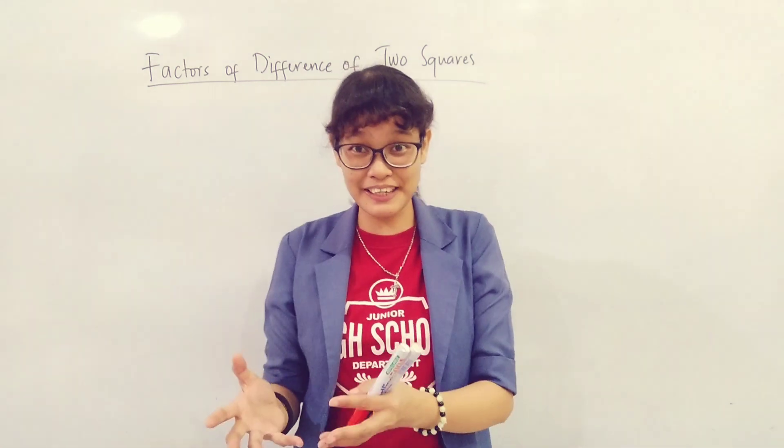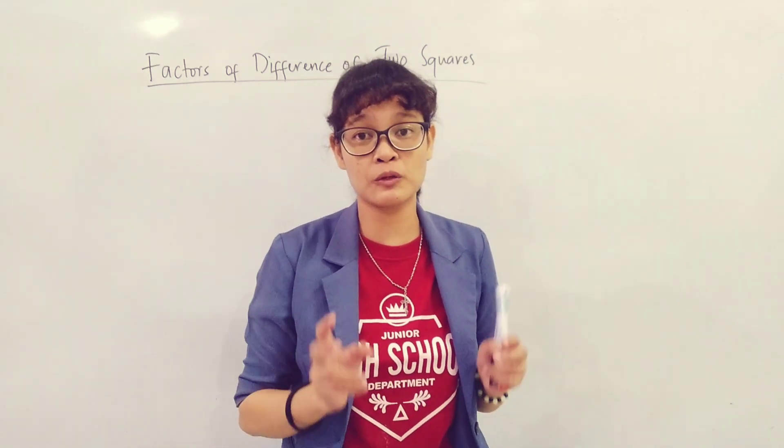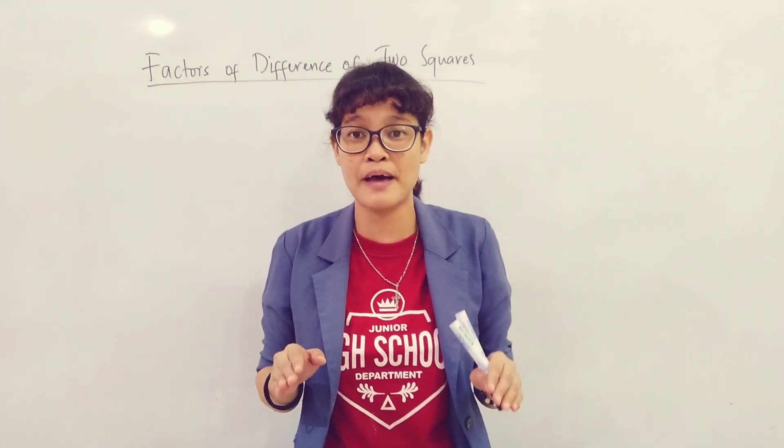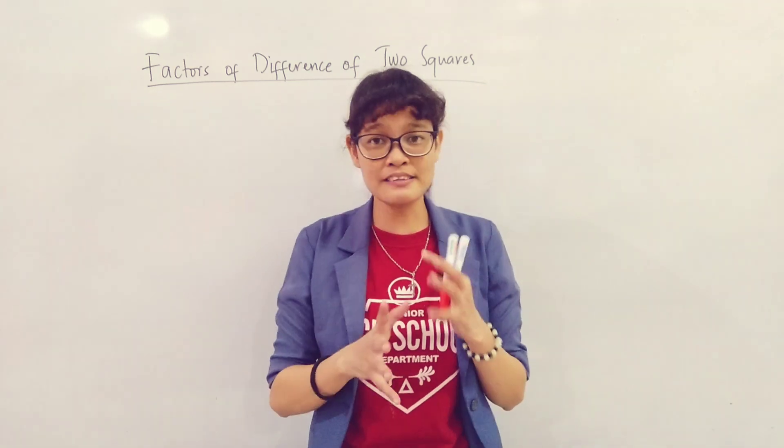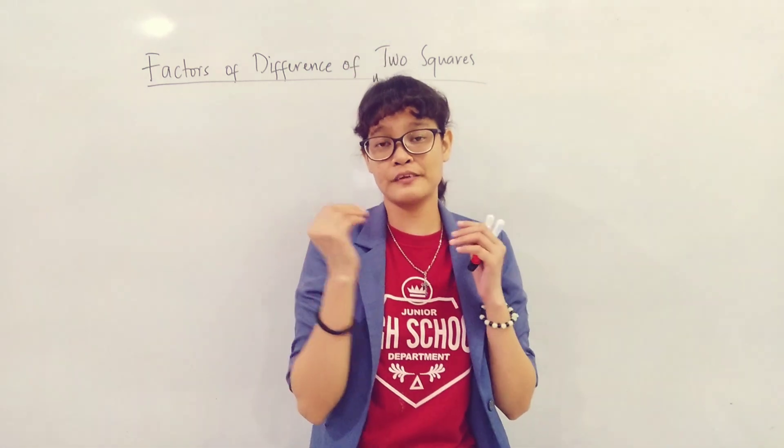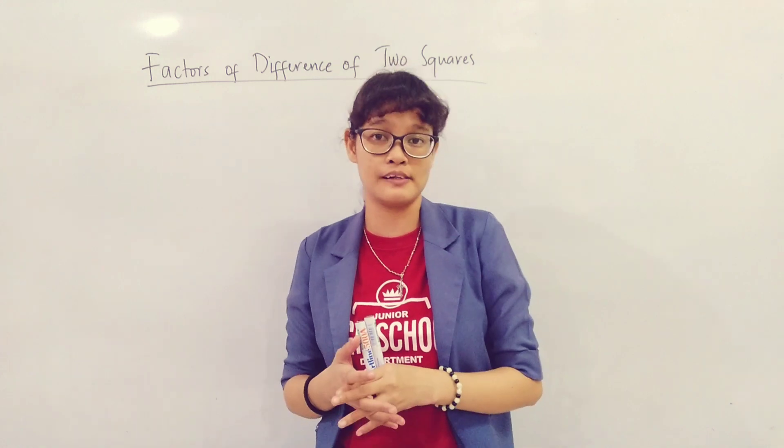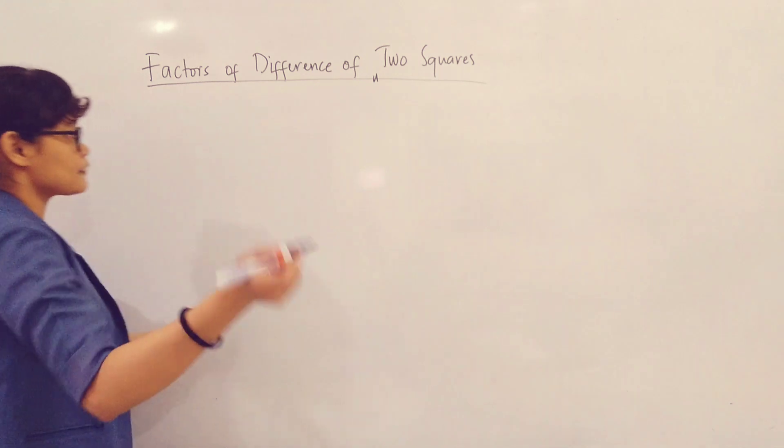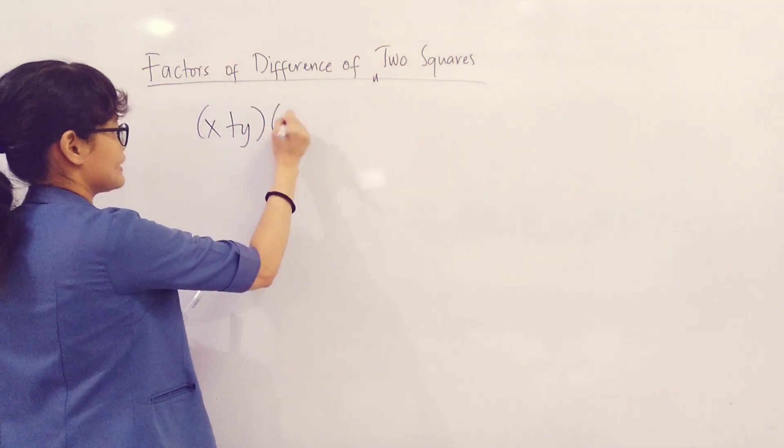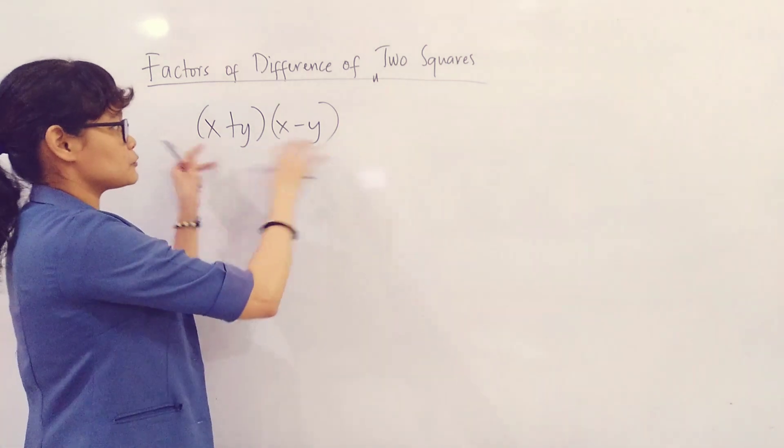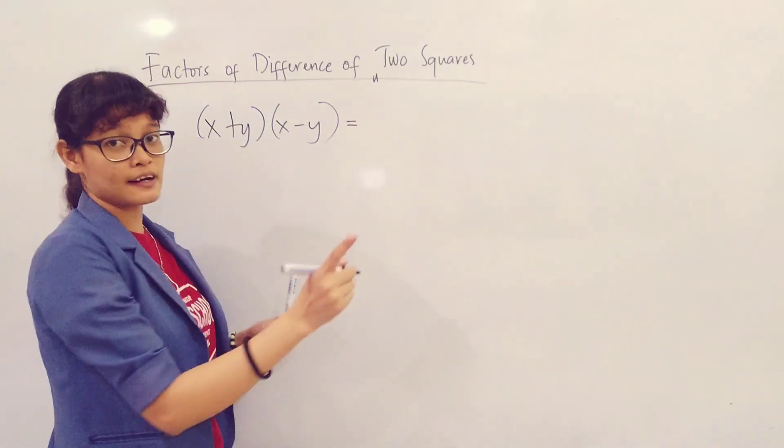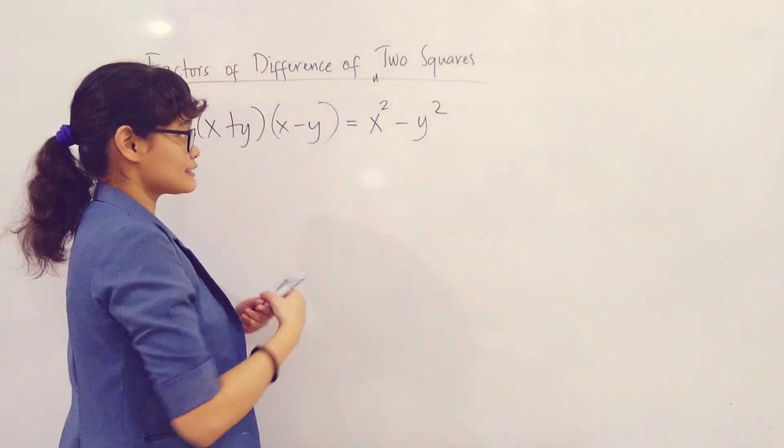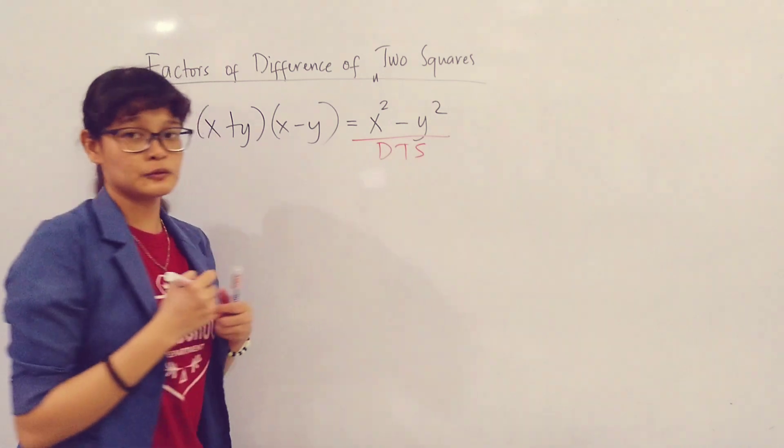Factoring the difference between two squares is actually a special type of factoring. It is a problem often used in mathematics. We know that the product of the sum and difference of two binomials is the difference between two squares. That is, say for example, you want to multiply x plus y and x minus y. Getting the product of these two binomials, we know that their product is just equal to x squared minus y squared. Hence, the difference between the two squares.